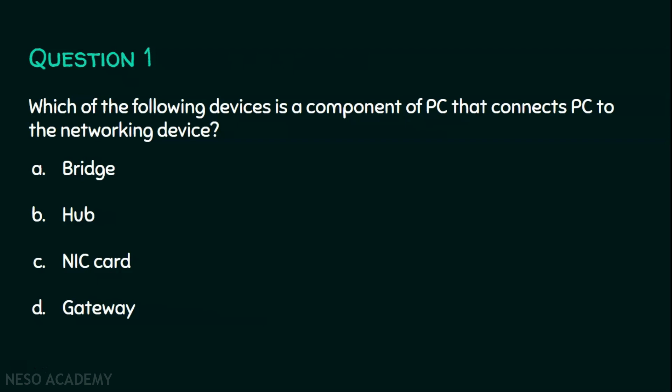Think of it. The answer is option C, NIC card. Because hub, bridge, and gateways are individual devices, whereas NIC card is a component of a PC which is used to establish communication from that PC to the networking device. NIC stands for Network Interface Card.